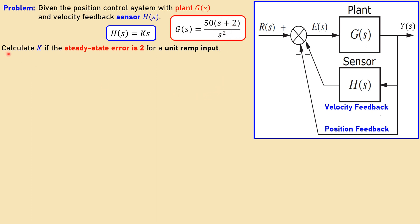Now what we want is the following: calculate the value of this K, which is the sensor gain, if the steady-state error is 2 for unit ramp input at the reference. So that is the problem for this example. We need the value of K.